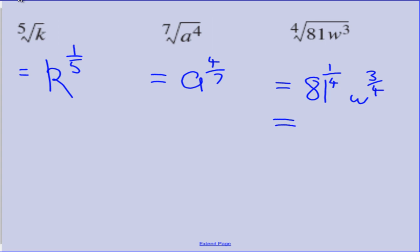Cleaning up the answer: 81 to the power of a quarter is the same as the fourth root of 81 — asking what number multiplied by itself 4 times gives 81. That is 3, since 3×3=9, ×3=27, ×3=81. Then we have W to the power of 3 quarters; since we don't know W, we leave it as 3W to the power of 3 quarters.